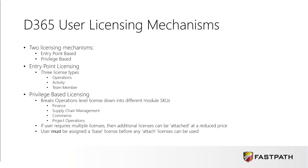You're not going to be able to just buy an operations-level license anymore. You'd actually have to buy the individual modules that are applicable to your user. If a user requires multiple licenses — for example, if they need a finance and a supply chain management license — you have this idea of having a base and an attach license. One of those licenses becomes a base and the other would be an attach. You can attach as many licenses to a user as they are required to have, and a user must have a base license first before attaching any other licenses.